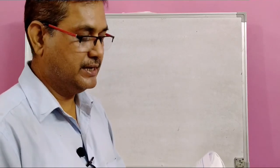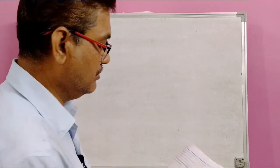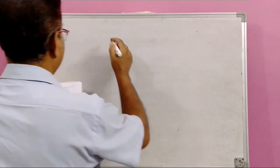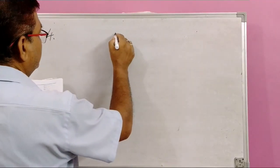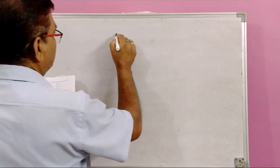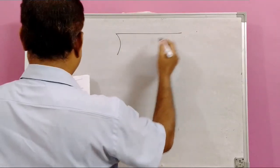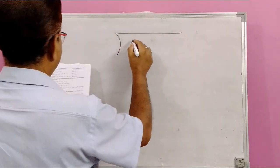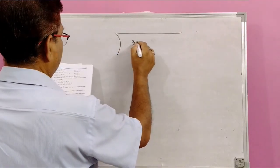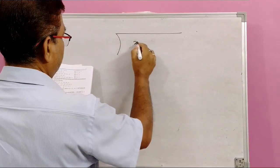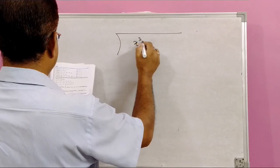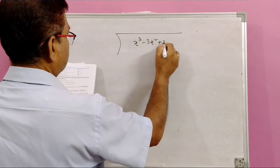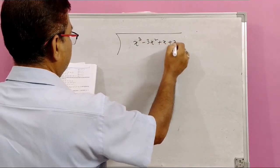So I will tell you how to do zx, how to change the zx. x cube minus tx squared plus x plus 2.